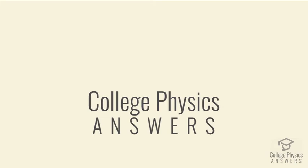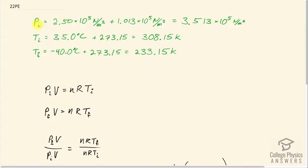This is College Physics Answers with Sean Ditzko. The original gauge pressure in these tires is 2.5 times 10 to the 5 newtons per square meter. Now the ideal gas law formula requires your pressure to be absolute pressure, so we have to add atmospheric pressure to that to get 3.513 times 10 to the 5 newtons per square meter.